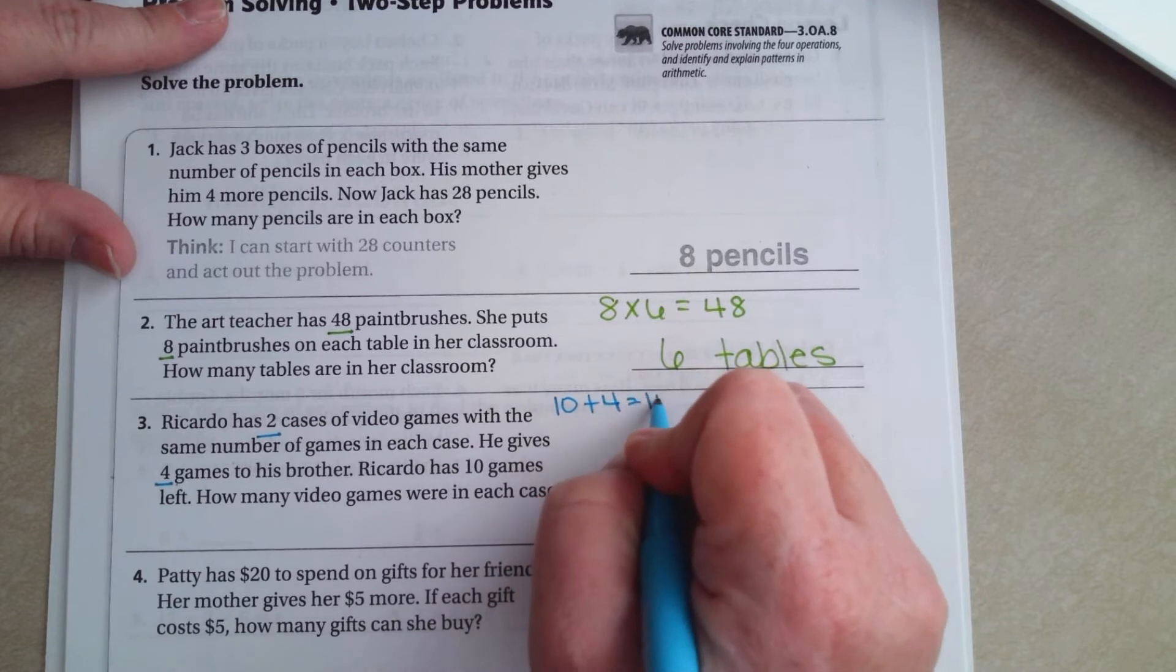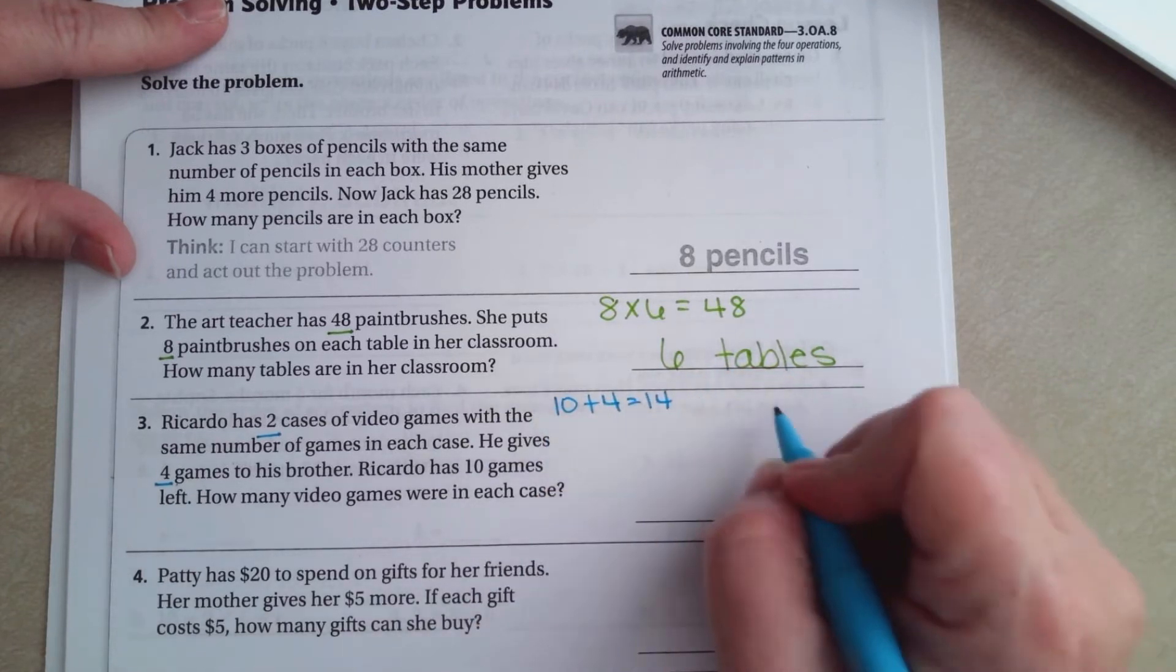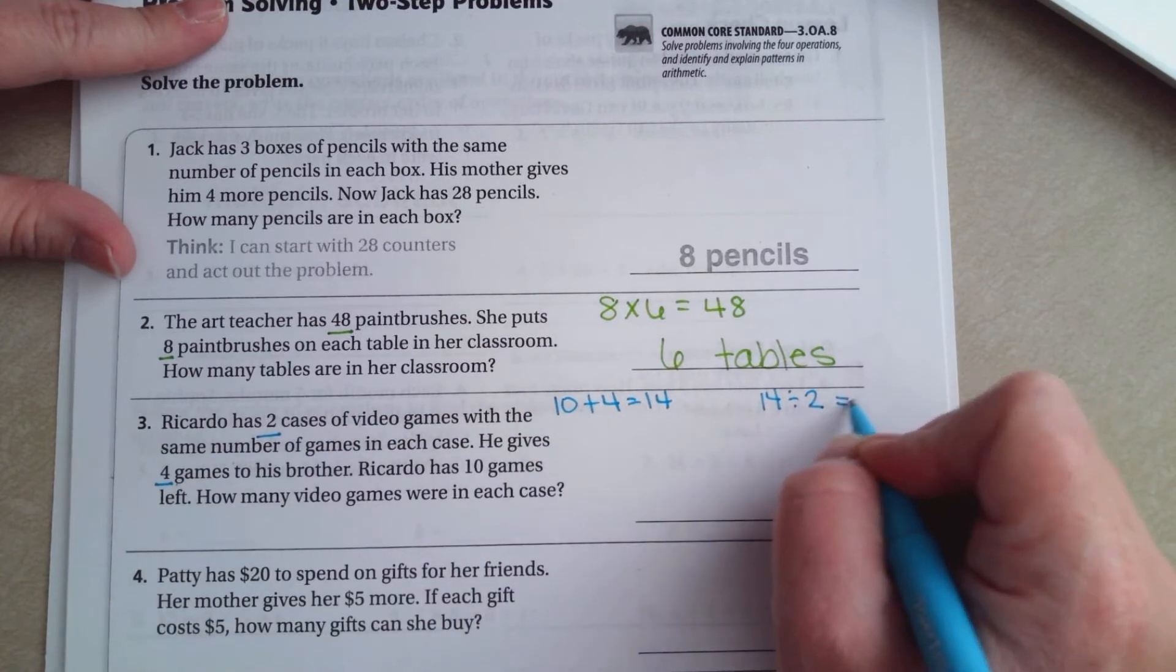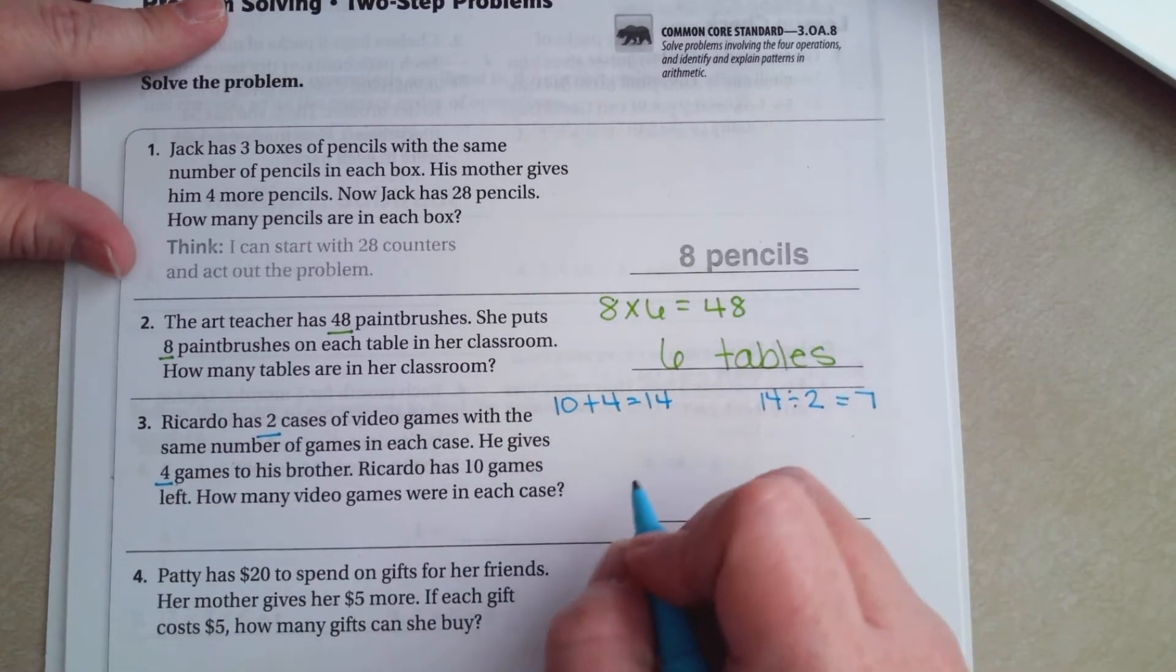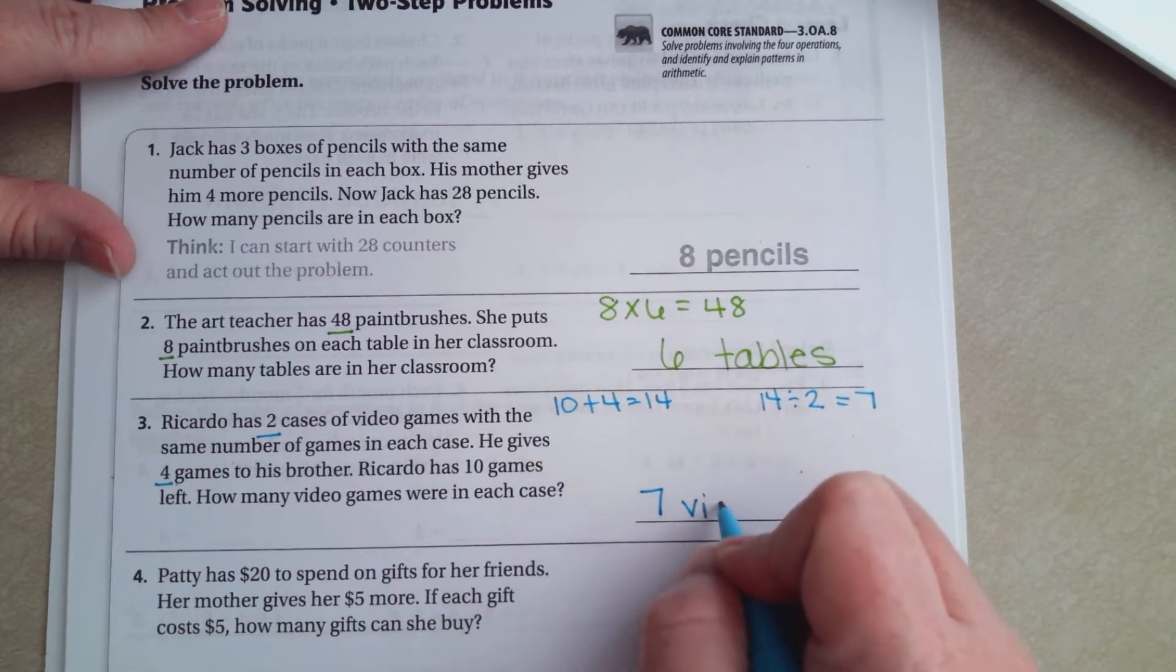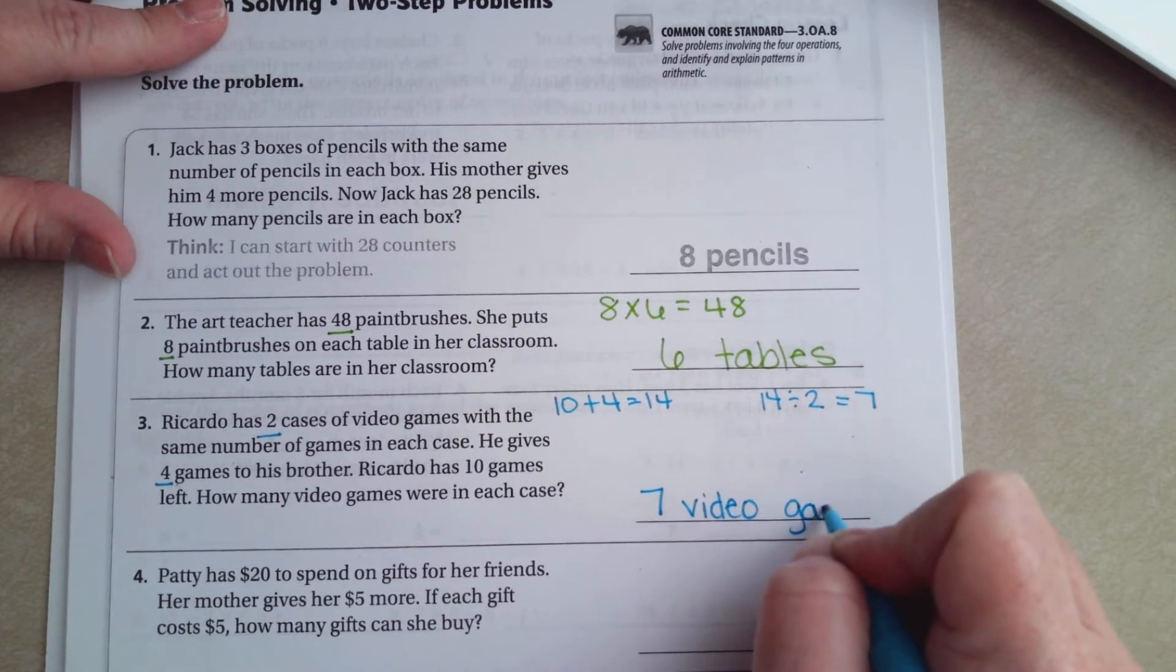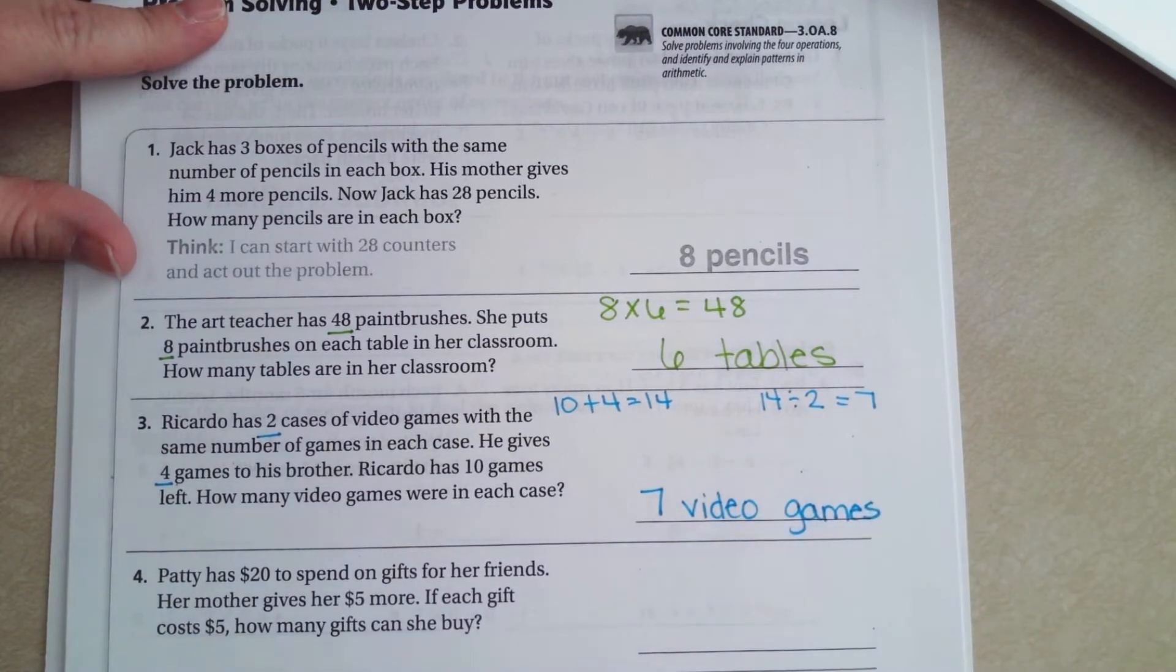Now 14 divided by those two cases, that's seven. So seven video games.